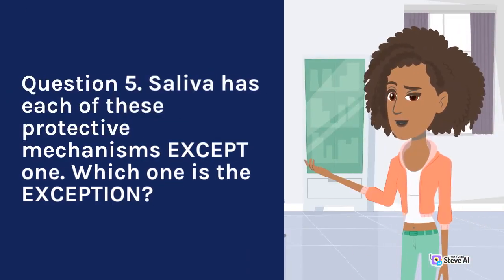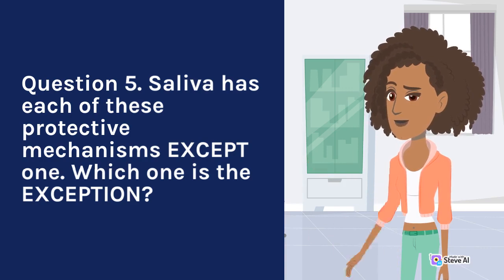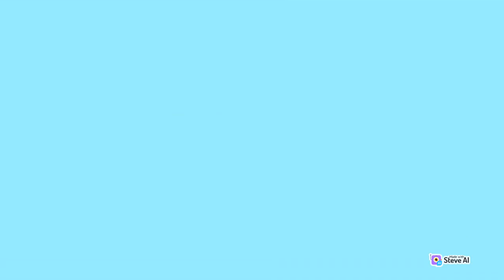Question 5. Saliva has each of these protective mechanisms except one. Which one is the exception? A. Increases in volume with increased inflammation. B. Buffers the acids that are created by oral bacteria. C. Contains secretory antibodies. D. Lubricates mucosal tissues. Answer: A. Increases in volume with increased inflammation.